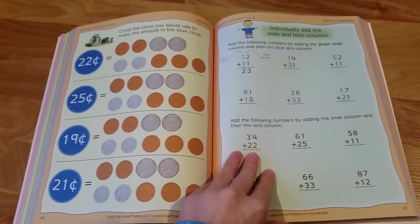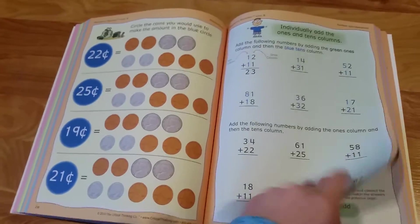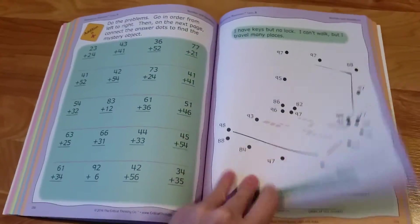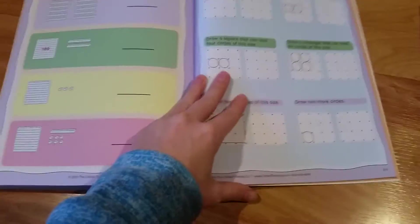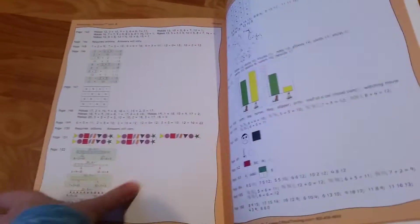That's kind of a peek inside the Level B or kind of equivalent to first grade level. Then in the very back there is an answer key. Let me show you that. If you need it, most of these at this level you probably don't, but it is there in case there is a question on that.